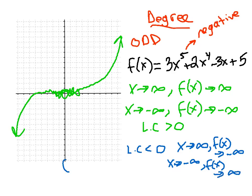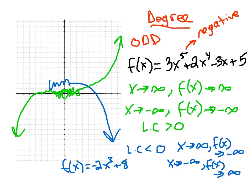A quick example: f(x) = -2x³ + 8. It's an odd degree, and the leading coefficient is negative. When we plug in positive numbers, x³ will be positive, and multiplying by negative two means the function goes down as x gets larger. As we plug in more and more negative numbers, x³ will be negative, and a negative times a negative means we get more and more larger positive numbers — so the function goes up.